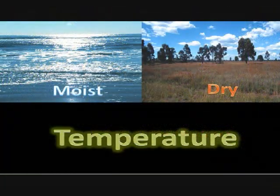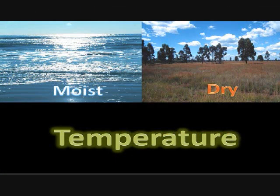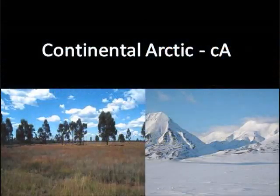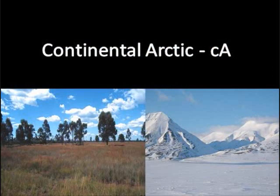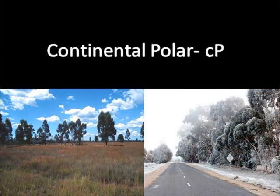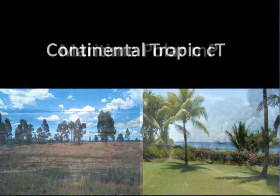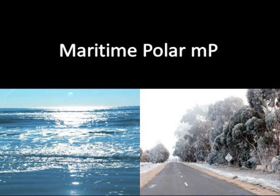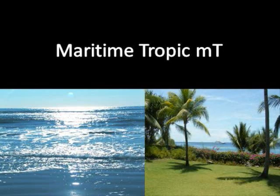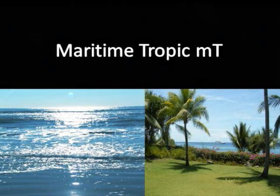Now put these two qualifications together to decide what type of air mass it is. If it is above the poles, then the air mass is called continental arctic. If the air mass is dry and cold, then it is called continental polar. If the air mass is warm and dry, it is called continental tropic. If the air is wet and cold, then it is called maritime polar. If the air mass is warm and moist, then it is called maritime tropic.